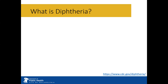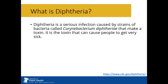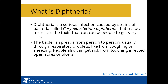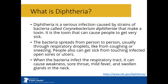What is diphtheria? Diphtheria is the D in DTaP and Tdap, and it is a serious infection caused by a bacterium that makes a toxin, and the toxin is what causes people to get very sick. The bacteria spreads from person to person, usually through respiratory droplets like from coughing or sneezing. People also can get sick from touching infected open sores or ulcers. When the bacteria infect the respiratory tract, it can cause weakness,